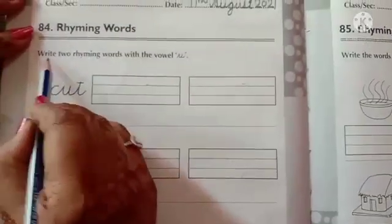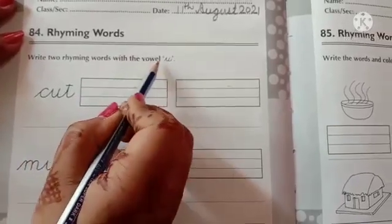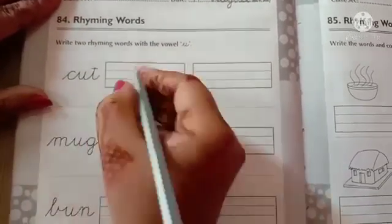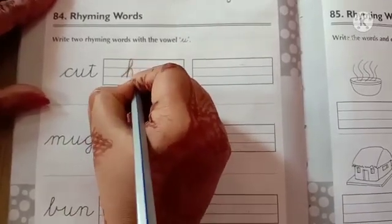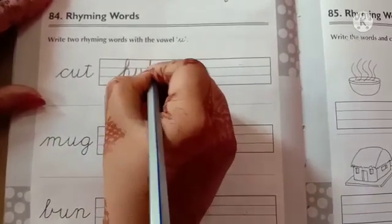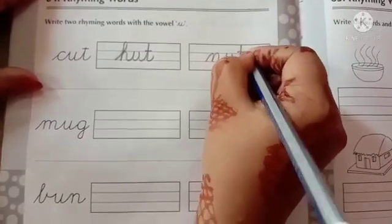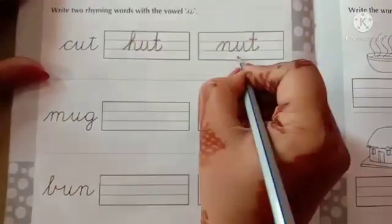Rhyming words. Write two rhyming words with the vowel U. Okay. Cut. Hut. Nut. Cut, Hut, Nut.